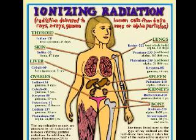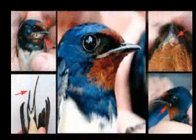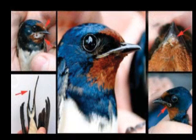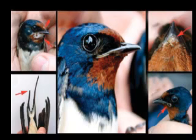Both ionizing and non-ionizing radiation can be harmful to organisms and can result in changes to the natural environment. Radiation hormesis is the theory that low doses of radiation can be beneficial to organisms. Radiation poisoning, radiation sickness, or a creeping dose, is a form of damage to organ tissue caused by excessive exposure to ionizing radiation. The term is generally used to refer to acute problems caused by a large dosage of radiation in a short period, though this also has occurred with long-term exposure. The clinical name for radiation sickness is acute radiation syndrome, ARS, as described by the CDC.